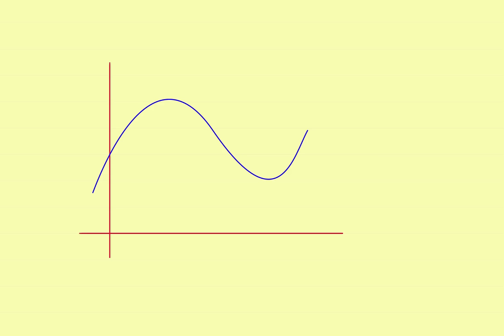Let's take a look at optimization problems. But before we get into the problems, let's take a quick look at why they work the way they do. It's all based on this: suppose you had a function that looks like a curve — it's got a maximum value at the peak and a minimum value down in the valley.